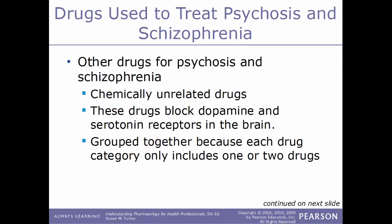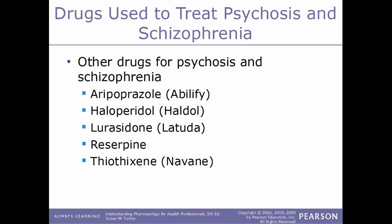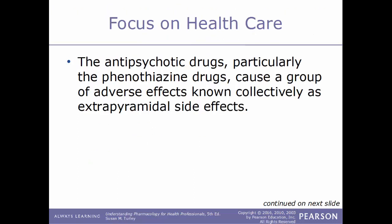Some other drugs used to treat psychosis and schizophrenia are chemically unrelated and are grouped together because each drug category includes only one or two drugs. These also act by blocking dopamine and serotonin receptors. Examples include aripiprazole (Abilify), haloperidol (Haldol), lurasidone (Latuda), risperidone, and thiothixene (Navane).